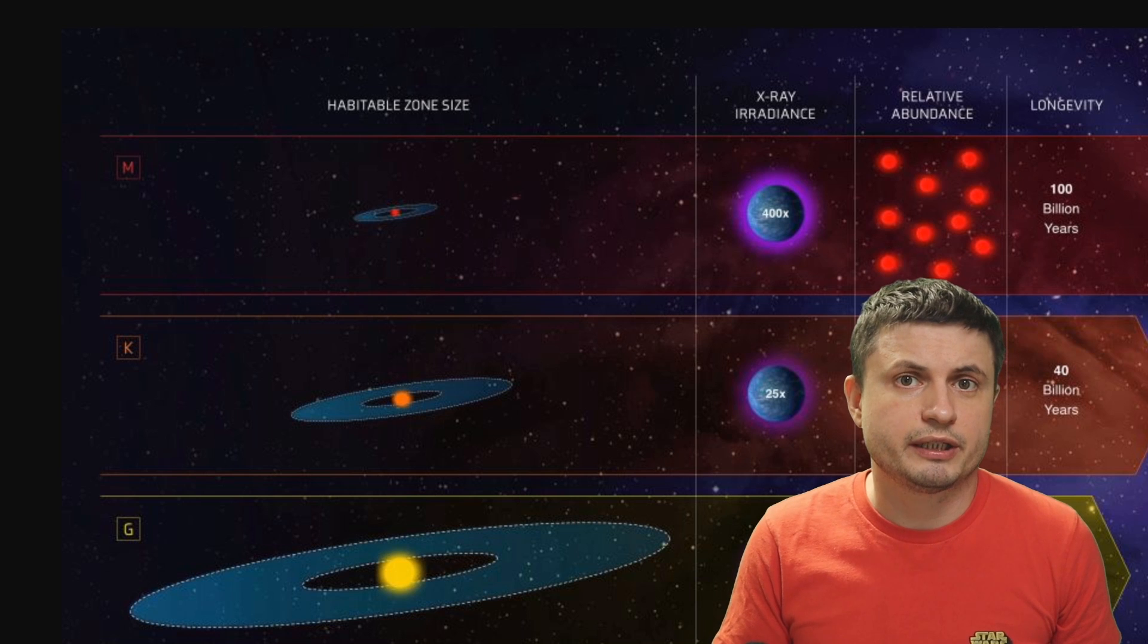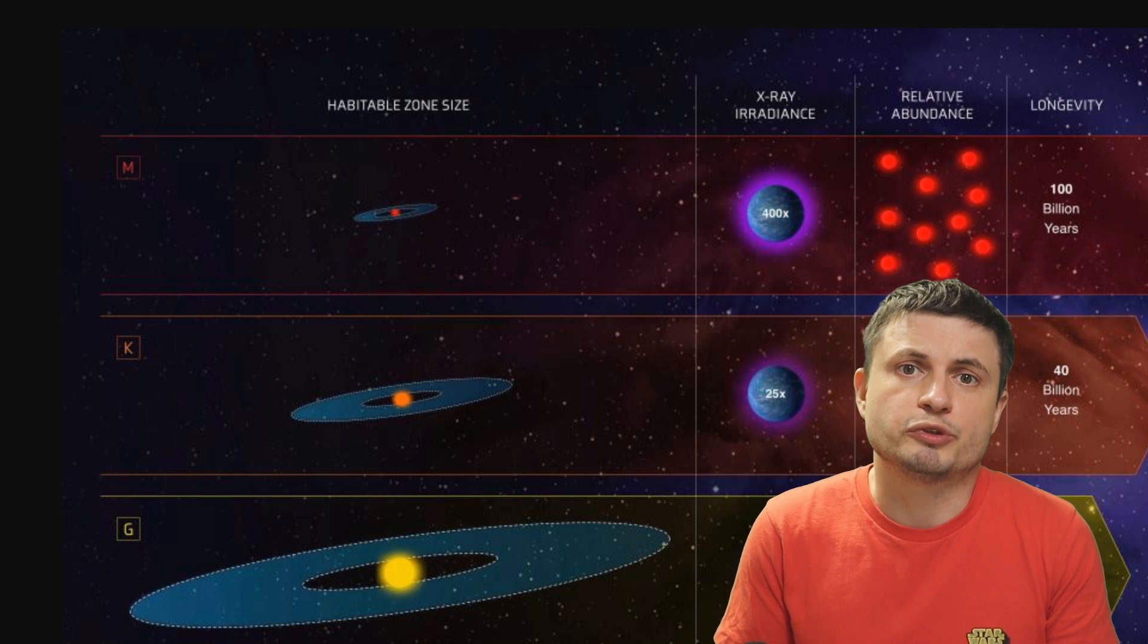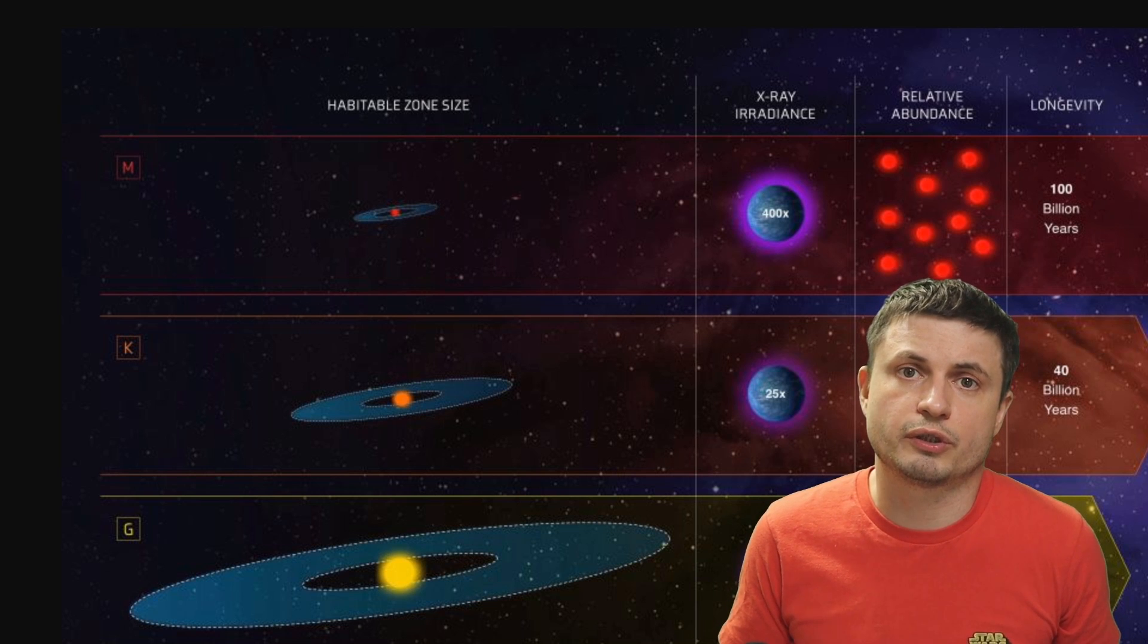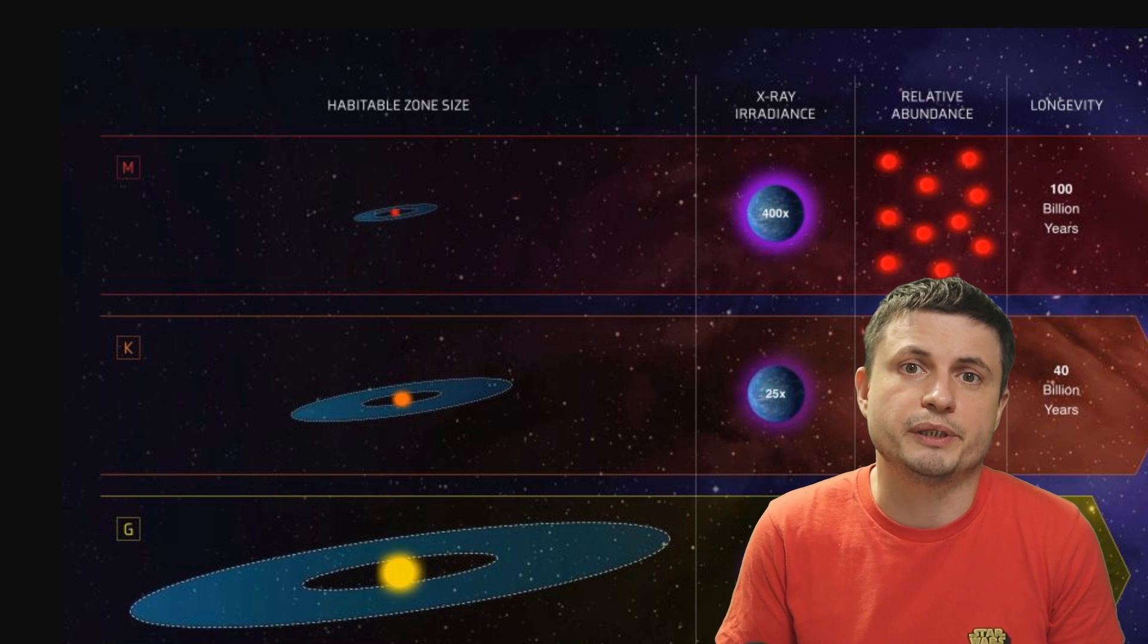G, K and F type stars, on the other hand, seem to be almost perfect because we know that our star, the G type, has mild enough conditions for planets like Earth to survive for billions of years.